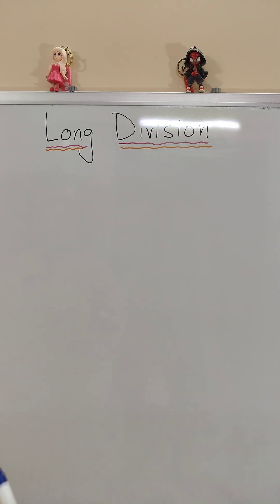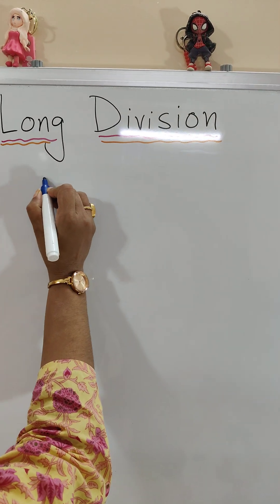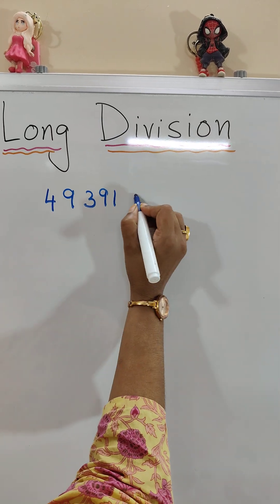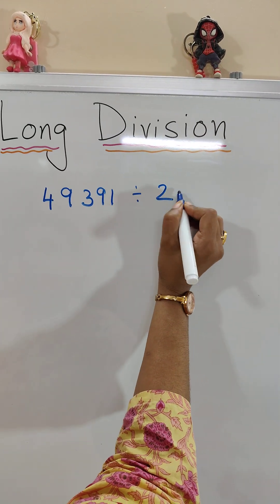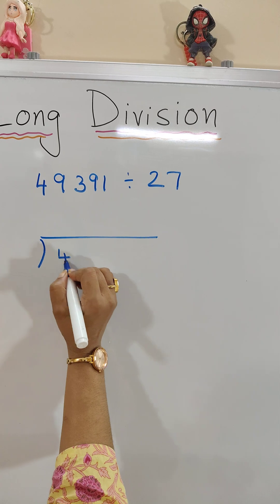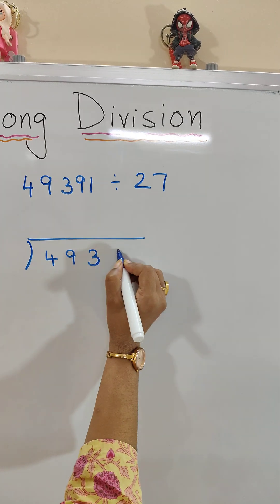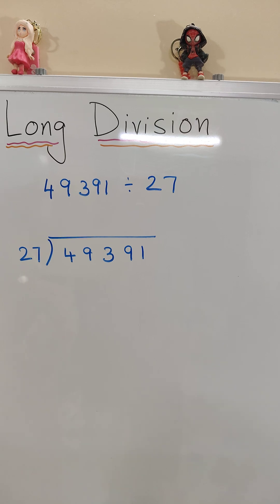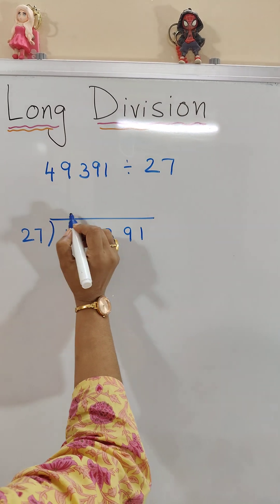Today I will teach you how to do long division: 49391 divided by 27. So, 27 times 1 is 27.